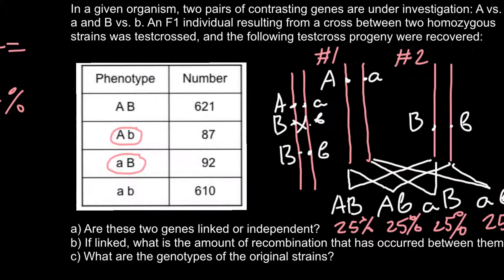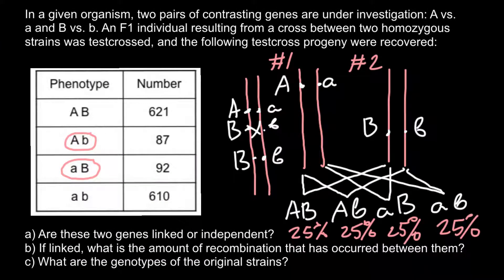Returning to our questions: we have found that genes A and B are linked and are on the same chromosome, because we see unequal numbers of recombinants and parental genotypes. The recombination frequency is 12.7%. For Question B — what is the amount of recombination between them? — the answer is 12.7%, which equals a distance of 12.7 centimorgans.